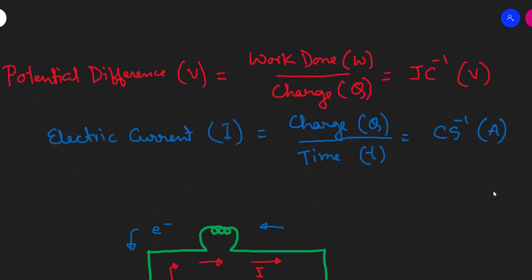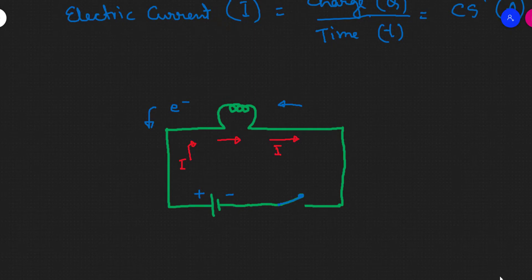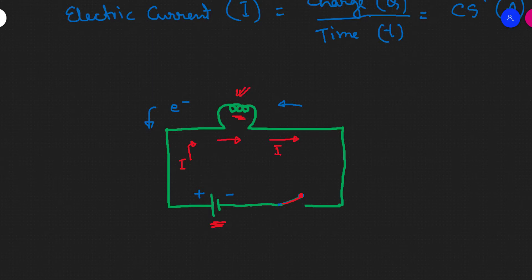We're going to talk about a simple electric circuit diagram. We're going to look at circuit symbols including bulbs and resistance bulbs. This is the battery symbol. The battery symbol is on the list of symbols you can use. We can also use the switch in the circuit. The circuit can be open or closed.